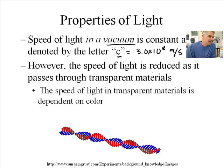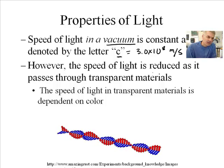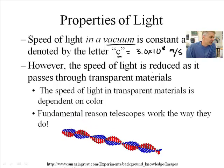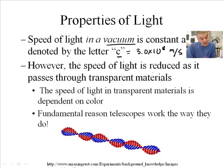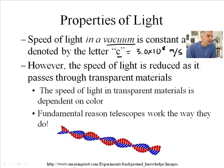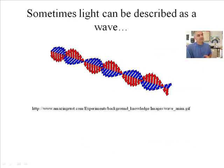The speed of light in transparent materials is dependent upon the color, so depending on the color of light is going to make a difference. This is the final reason the telescopes work the way they do. Again, telescopes is the next chapter, so we'll get into that.